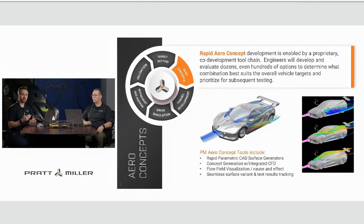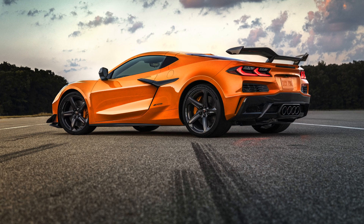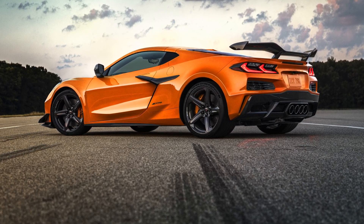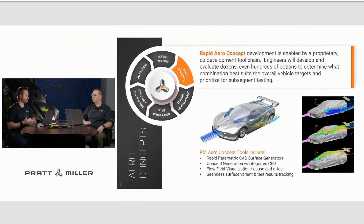Another very important part that we consider early in the program is the styling. Ultimately, styling sells cars — it's important, and we don't hide from that. We prefer to be proactive rather than reactive when it comes to styling. This means collaborating with customer styling departments. Instead of reporting how bad a shape is, we like to answer the question: how good could it be?